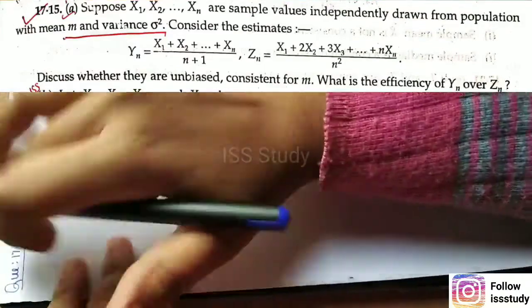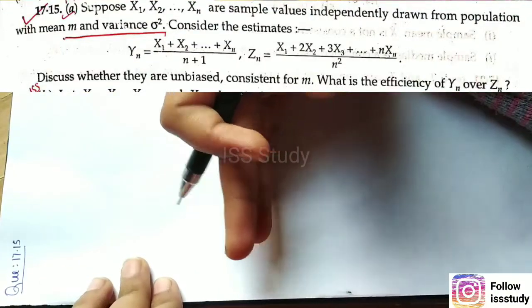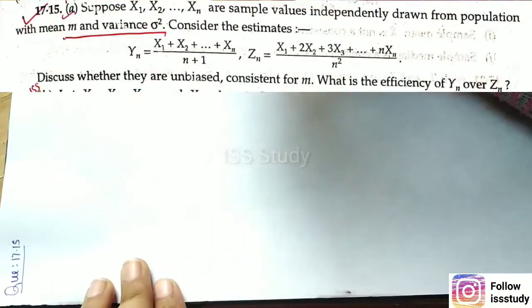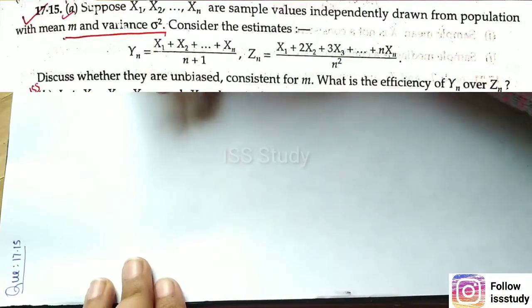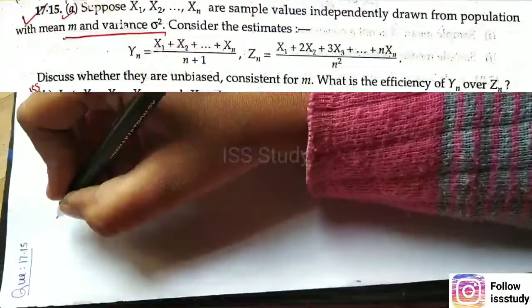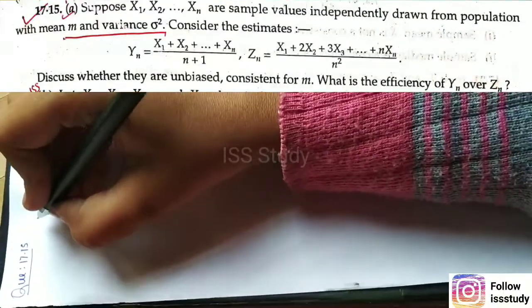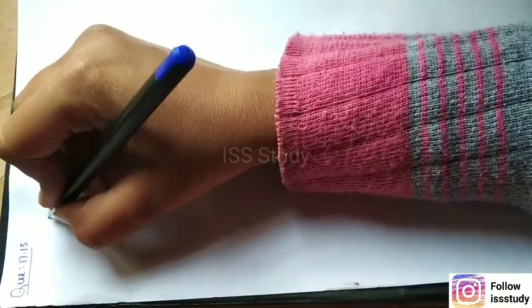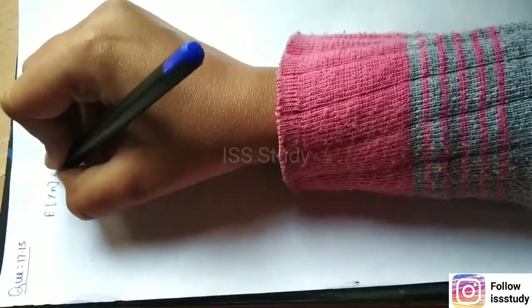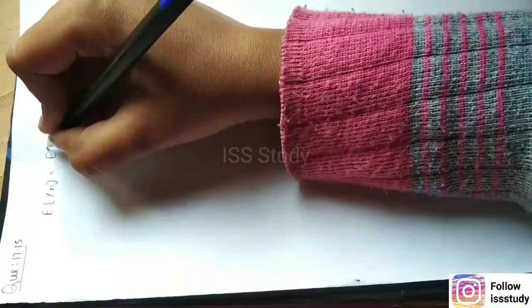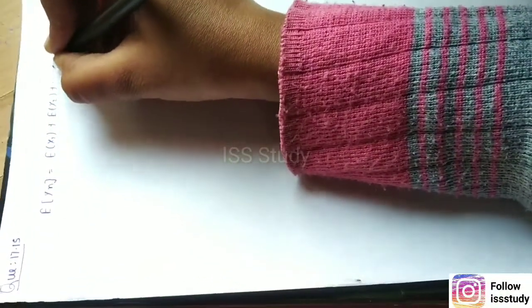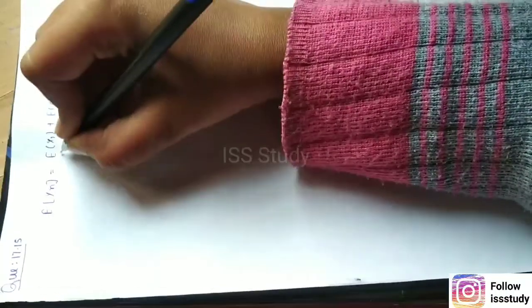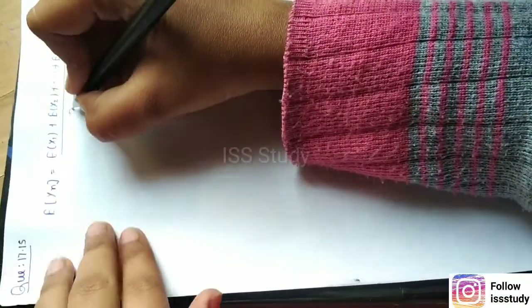First, you need to know about unbiased and consistent. We will find the mean and variance, then check unbiasedness and consistency. So let's start. We will find the expectation of yn. The statistic given is yn, so expectation of x1 plus expectation of x2 plus up to expectation of xn, divided by n plus 1.